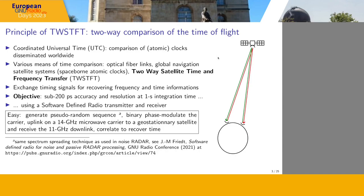Two-way satellite time and frequency transfer is the third technique for creating UTC. The basic technique is that if you have two dishes pointing in two different countries — possibly two different continents, for example North America and Western Europe — these two clocks can be compared by broadcasting a signal from one observatory to the other in order to compare their clocks.